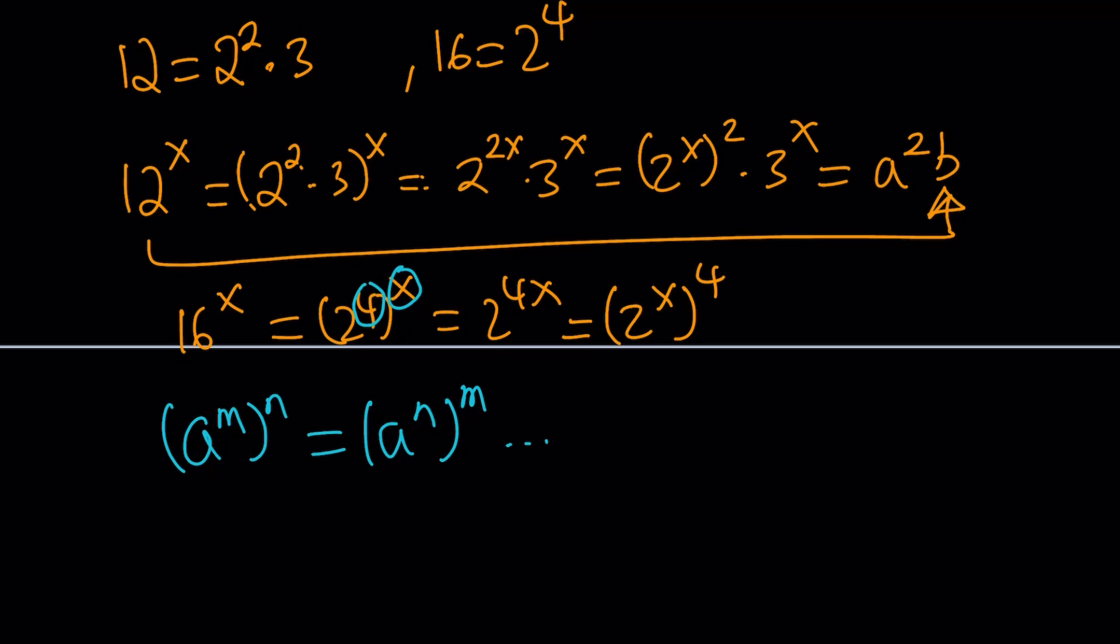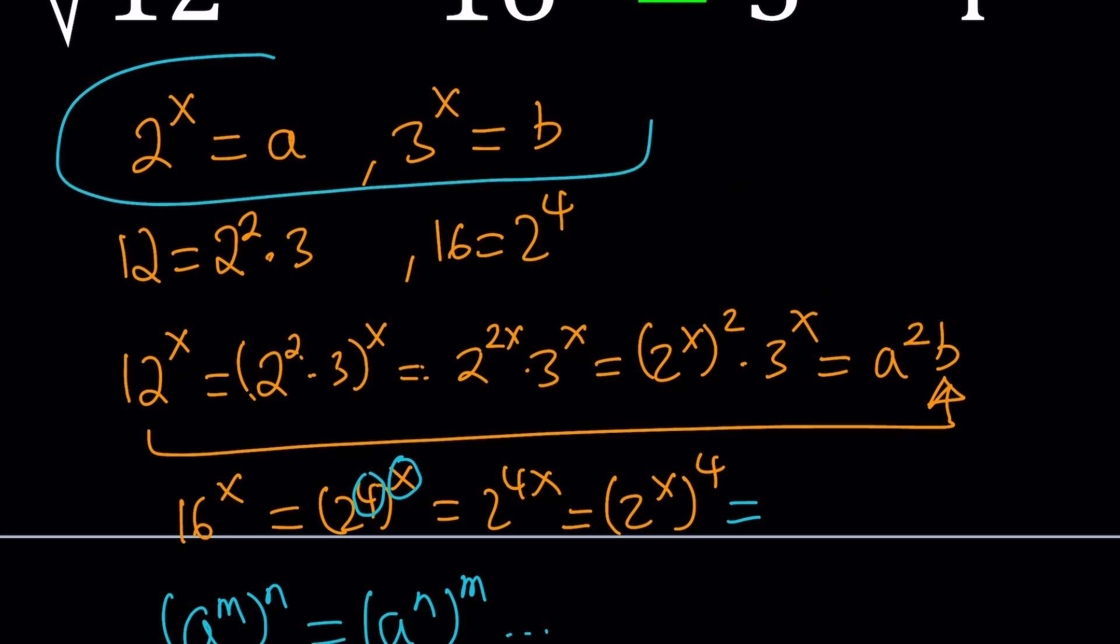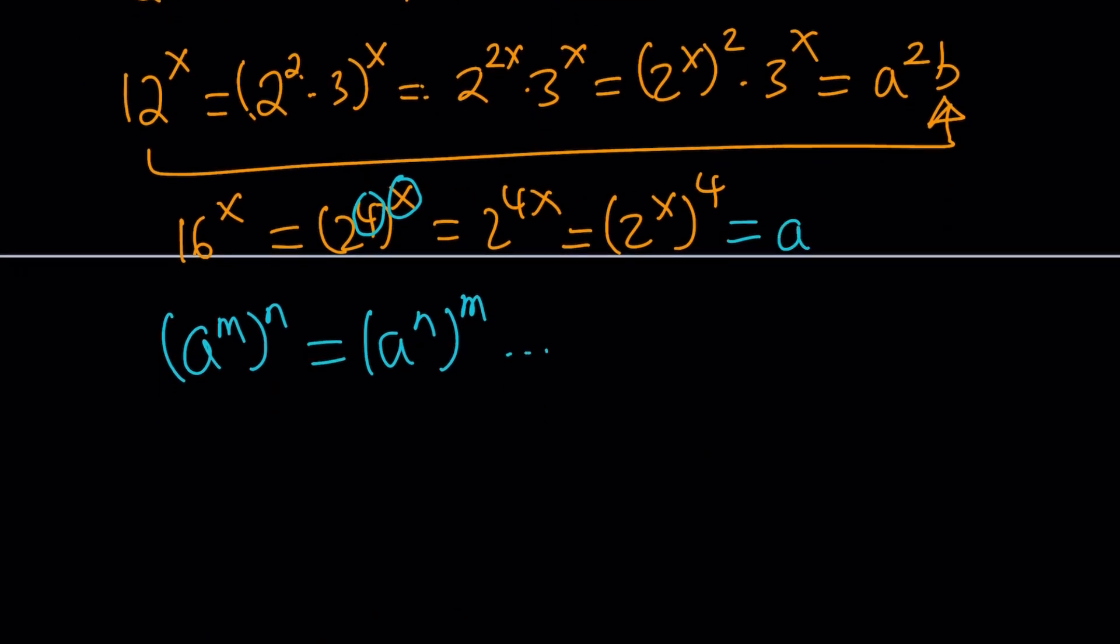So now, since 2 to the power x is equal to a, from here, then we can basically replace 2 to the x with a. This gives us a to the 4th power. So 16 to the power x can be written as a to the 4th power.